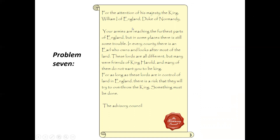The final problem: in every county there is an earl who owns and looks after most of the land. These lords are all different, but many were friends of King Harold and do not want William to be king. For as long as the lords are in control of the land in England, there is a risk they will try to overthrow the king. These are the seven issues William faces when managing and running England after Hastings.